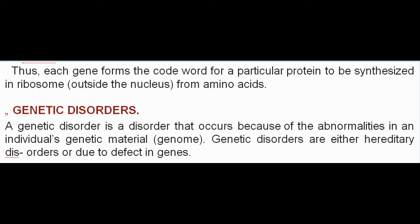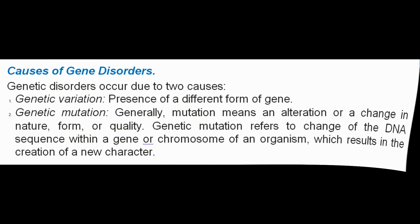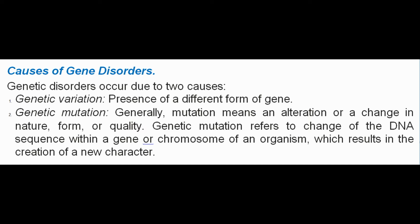A genetic disorder is a disorder that occurs because of abnormalities in an individual's genetic material (genome). Genetic disorders are either hereditary or due to a defect in genes. They occur due to two causes: genetic variation — the presence of a different form of a gene — and genetic mutation, which refers to a change in the DNA sequence within a gene or chromosome of an organism, resulting in the creation of a new character.